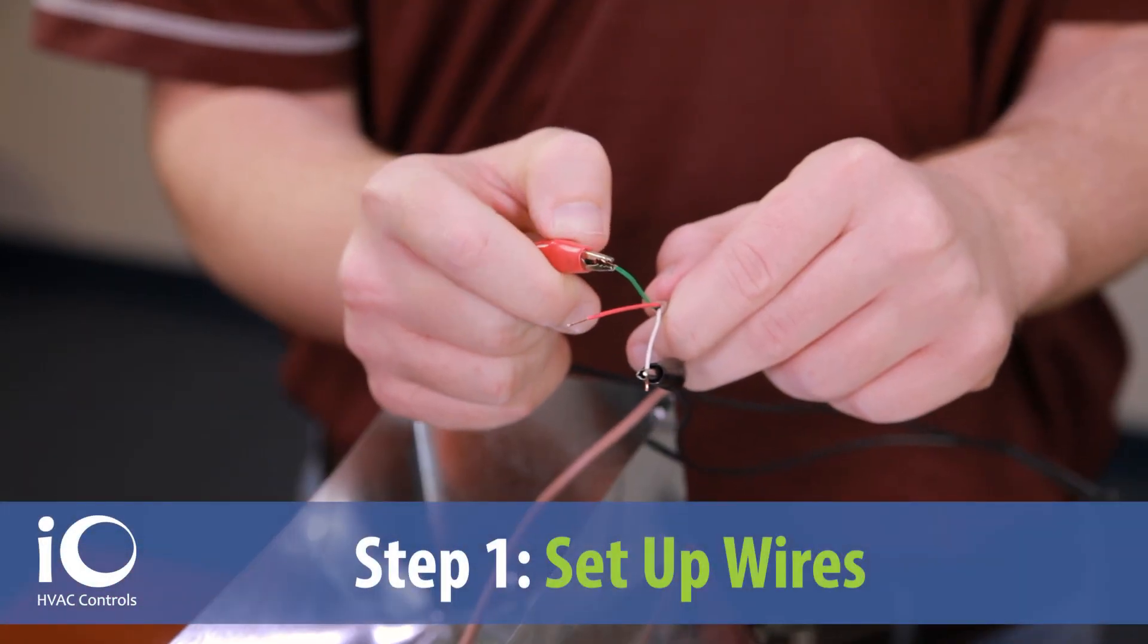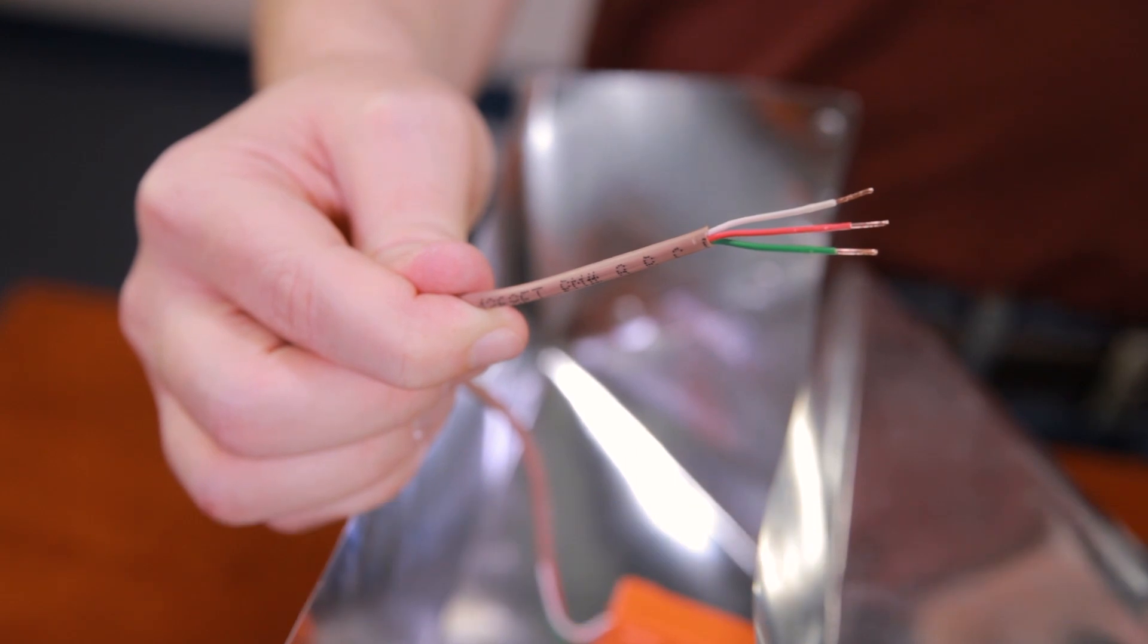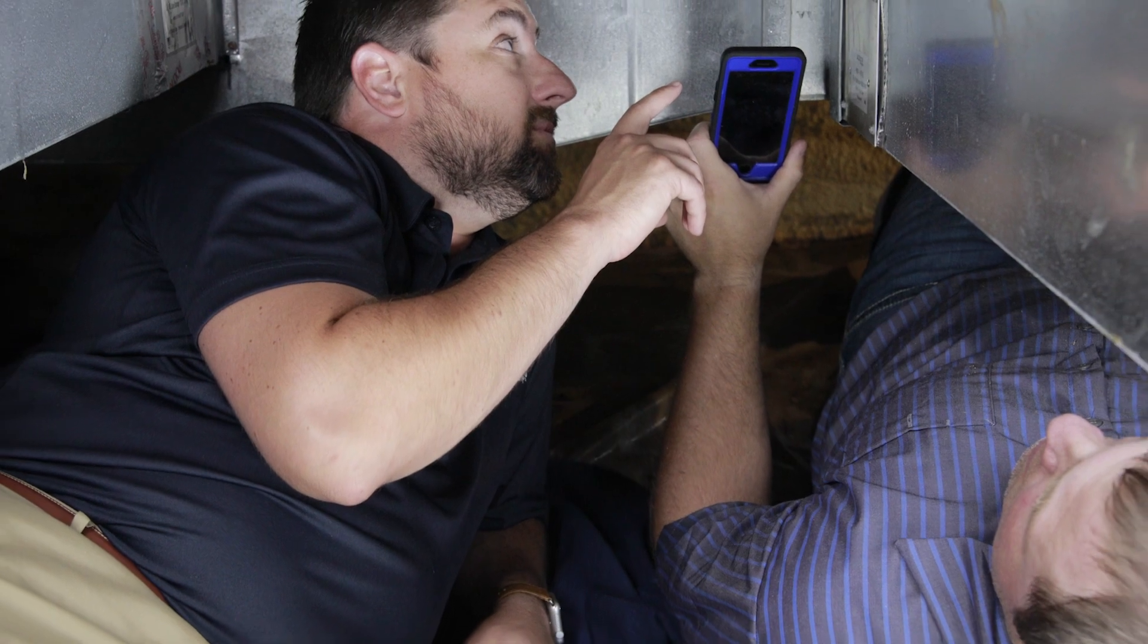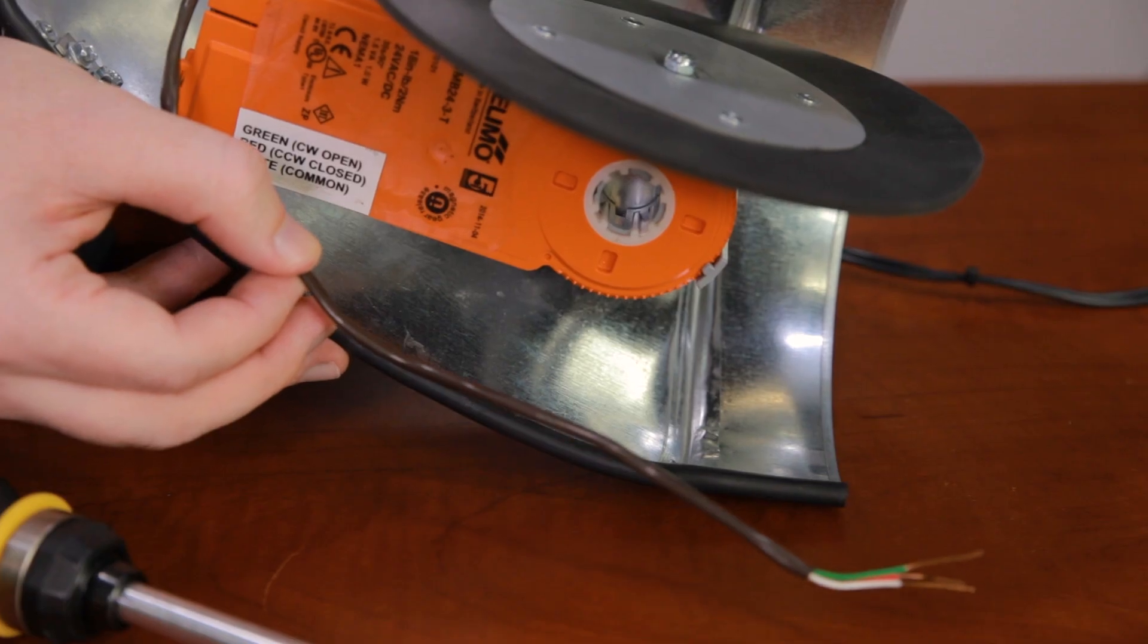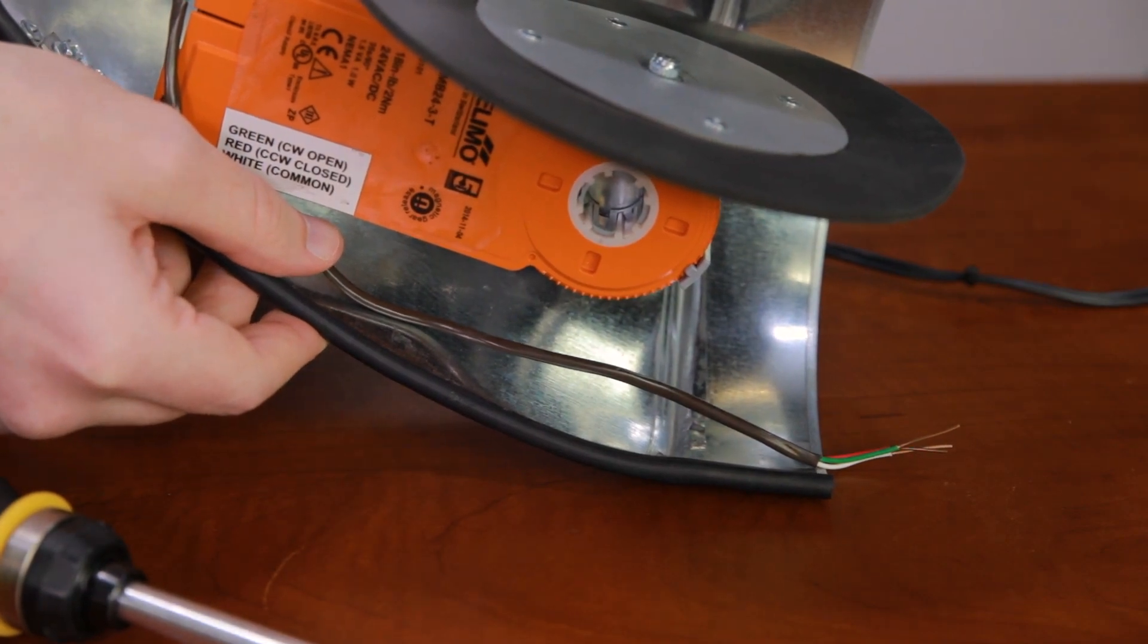Step 1. The register boot damper is powered by 24 volts AC. 18-3 thermostat wire is recommended. Wire not included. When possible, run the wire through the crawl space or a chase. If not available, run wire through ductwork. Plenum rated wire is highly recommended.